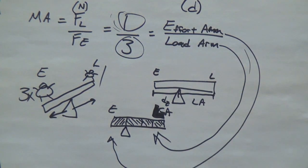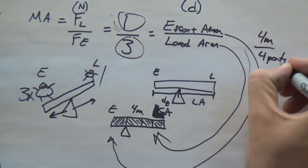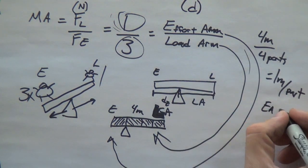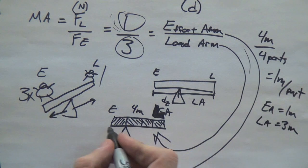So, to conclude this example, let's just say we want it balanced. So, let's pretend it's a four meter plank. Four meters divided by four parts, one part load, three parts effort. The effort arm should be one meter away from the fulcrum, and the load should be three meters away from the fulcrum in order for it to be balanced.